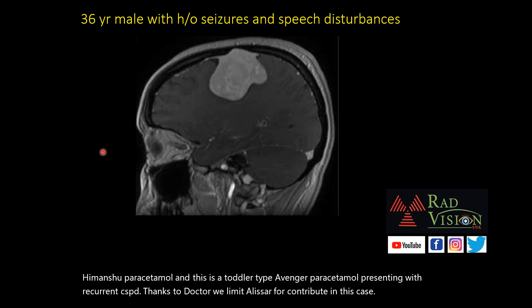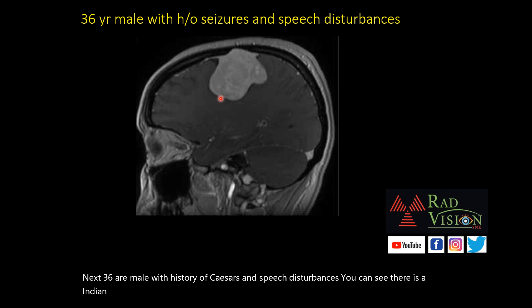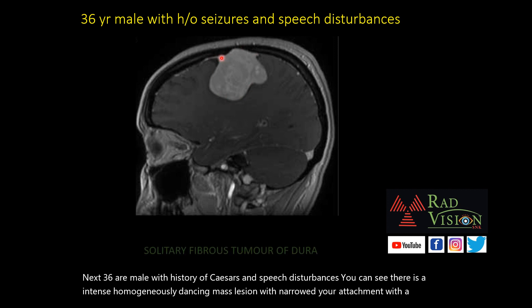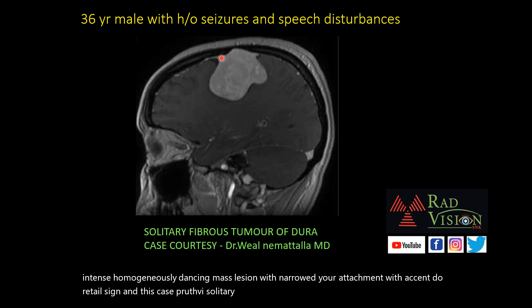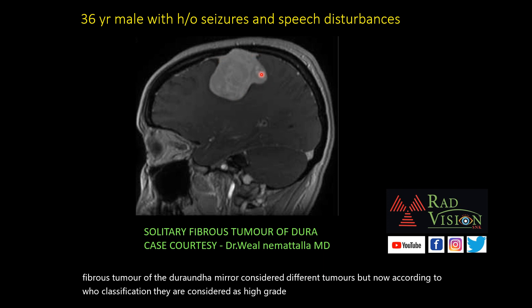Next case: a 36-year-old male with history of seizures and speech disturbances. There is an intensely homogeneously enhancing mass lesion with narrow dural attachment and adjacent dural tail sign. This proved to be a solitary fibrous tumor of the dura. Previously, solitary fibrous tumor and hemangiopericytoma were considered different tumors, but now according to WHO classification, they are considered high-grade solitary fibrous tumors.